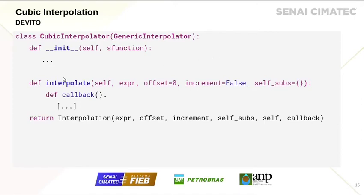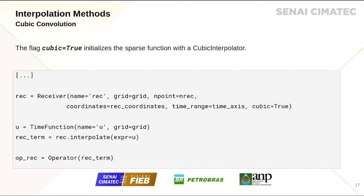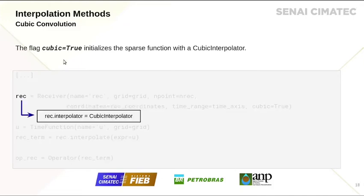This implementation is made inside a new class — the cubic interpolation class — inside the interpolate method, where we generate all the symbolic equations that will be translated to C language and return the result of a cubic interpolation. The receiver is created with the linear interpolator as a standard, so we define a flag cubic. When the cubic flag is equal to true, we define that the interpolator is now a cubic interpolator, no longer a linear interpolator. The user only needs to change the flag and can use the interpolate method in the same way as with the linear interpolator — the user doesn't have to worry about how it works inside the DeVito structure.